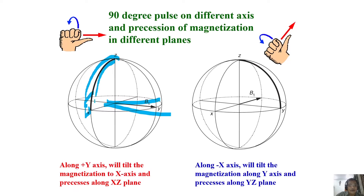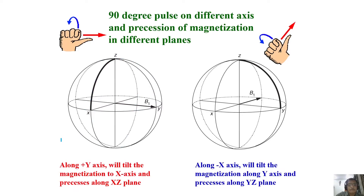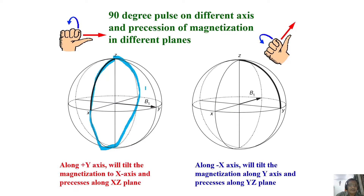If I apply a pulse along minus X and bring magnetization to plus Y, that is 90-minus-X. Continuing with 180-minus-X brings it to minus Z, 270-minus-X brings it to minus Y, and 360-minus-X takes it back to Z. So you can define pulse faces as 90-X, 90-Y, 180-X, 180-Y, and so forth. Applying pulse along minus X makes magnetization rotate in the Y-Z plane.